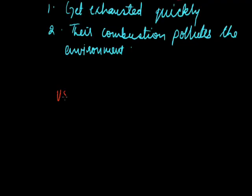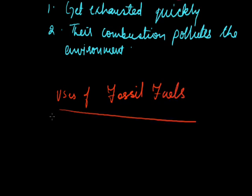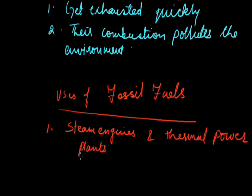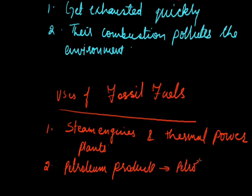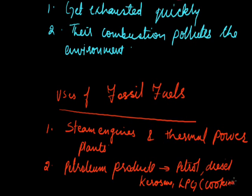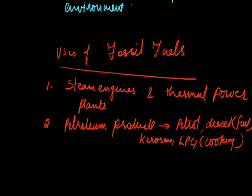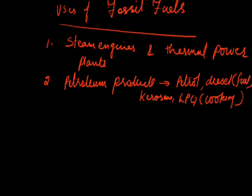Uses of fossil fuels: in thermal power plants and steam engines they are used extensively. Many petroleum products are formed and have many uses — products like petrol and diesel are used in motor vehicles and ships. Other products like kerosene and LPG (liquefied petroleum gas) are used for cooking purposes. Natural gas is a good alternative to fossil fuels like coal and petroleum. The use of alternative non-conventional energy sources such as solar energy and wind energy should be promoted to save reserves of fossil fuels.